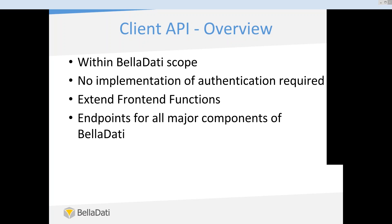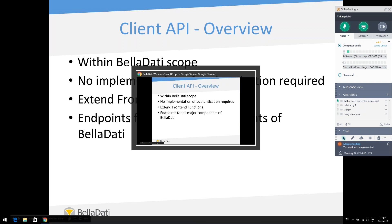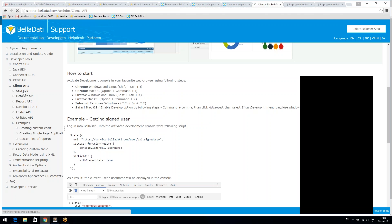The client API is an API that is within Belldata scope, so it works in the context of the logged-in user in the browser. You don't have to implement any authentication like you would with a REST API. All you are developing is front-end — you are using JavaScript, jQuery, and so on — and you can extend front-end functions.